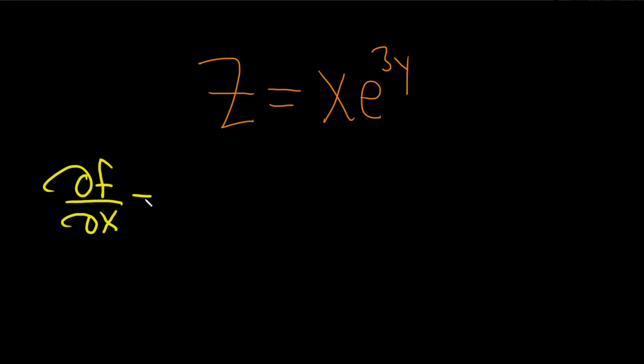So when we're finding the partial derivative with respect to x, we want to treat all of the other variables as constants. So in particular, y is a constant, so this whole piece here, e to the 3y, is a constant. It just hangs out.